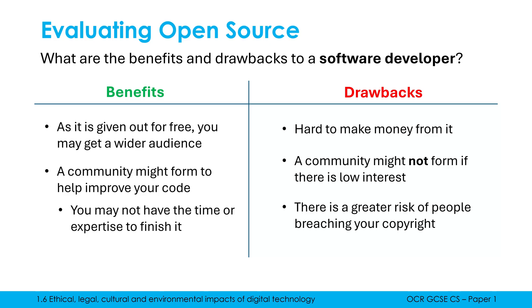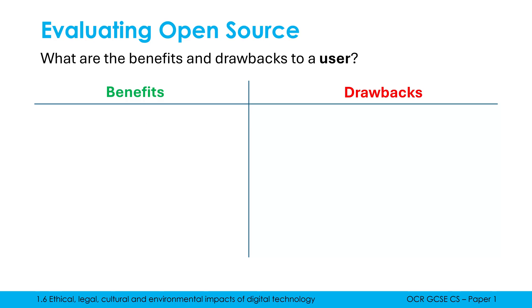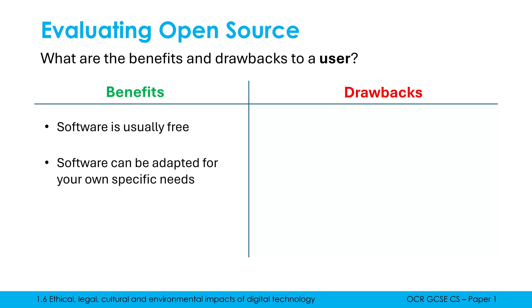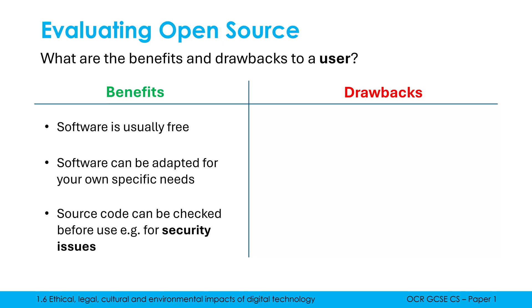From the perspective of a user using open source software: first of all, it's free, so you haven't got to pay for it. The key other benefit is you're able to adapt the software for your own specific needs — if it's missing a feature, you might add it; if it's bulky, you might delete some code. It can be adapted to your needs. And especially if you're a big company or very paranoid about security, you are able to inspect the source code to look for security issues, bugs, or any hidden malware. It's all available to view, whereas with proprietary software you're trusting that it's all okay.